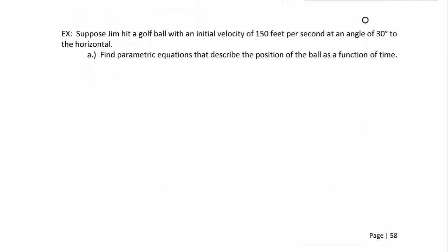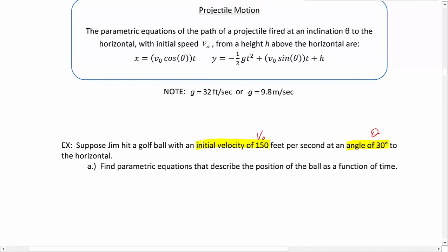Suppose Jim hit a golf ball with an initial velocity of 150 feet per second at an angle of 30 degrees to the horizontal. They're giving us our v sub 0, which is 150, and our angle theta is 30 degrees. Notice that the velocity was given in feet per second, so when we plug in for gravity, we want to be using U.S. units. In our first part, we want to find the parametric equations that describe the position of the ball as a function of time. So we're taking this v sub 0 and theta and plugging it into our equation and cleaning it up as best we can.